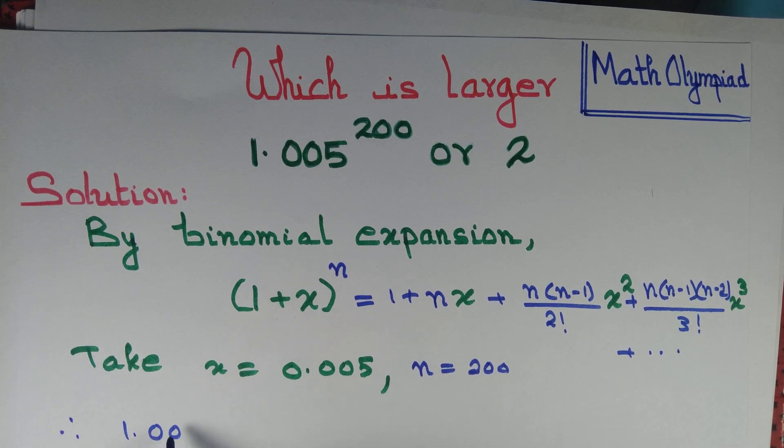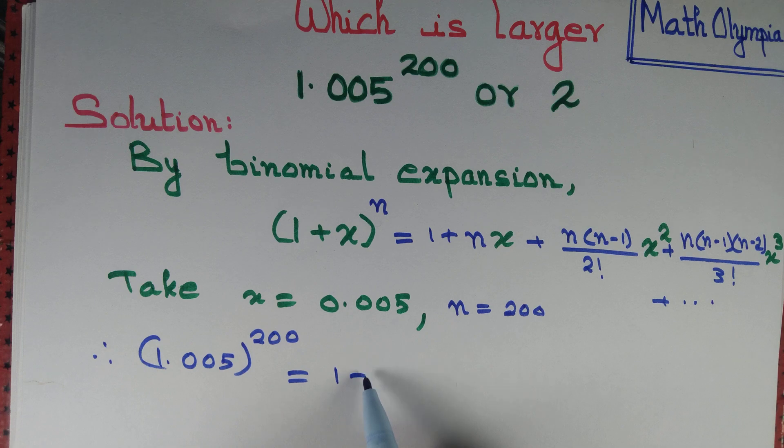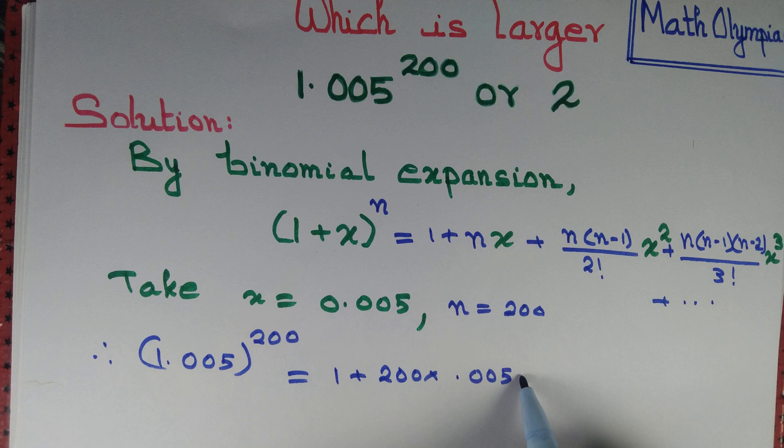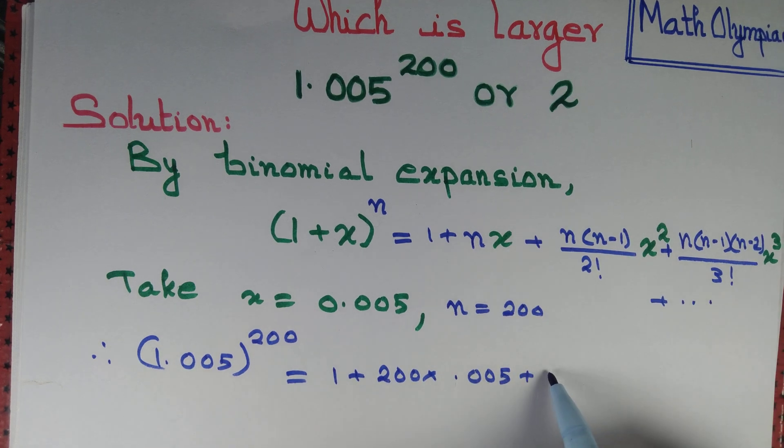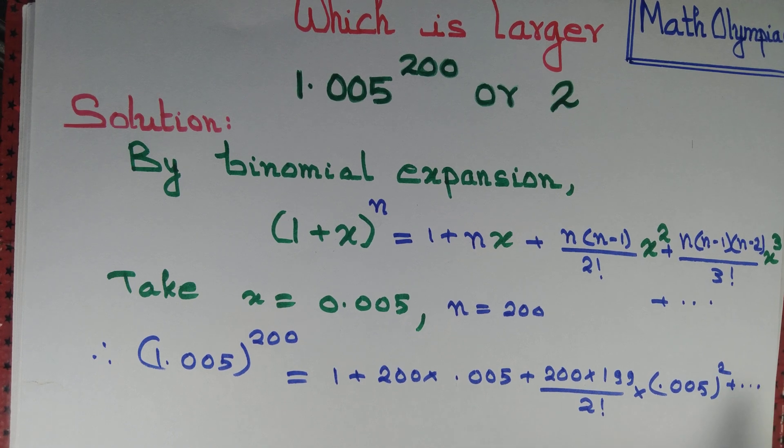1.005 to the power 200 equals 1 plus 200 into 0.005 plus 200 into 199 by factorial 2 into 0.005 whole square and so on.